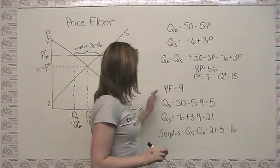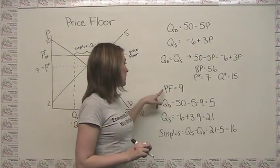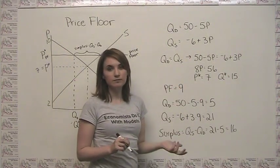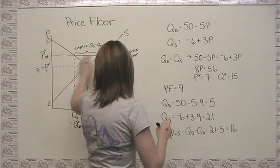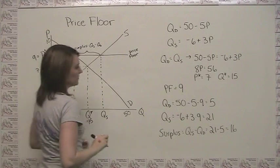Now let's say that we put a price floor in place at a price of 9. First of all, because 9 is bigger than 7, we know that this price floor is going to be binding. And we can say we're setting this price floor here at a price of 9.